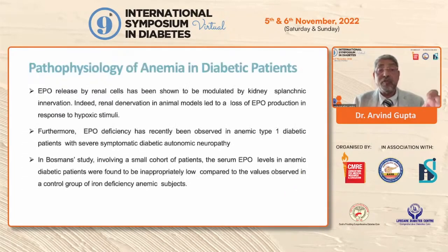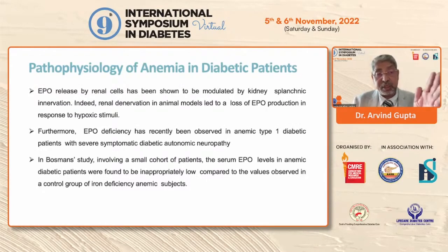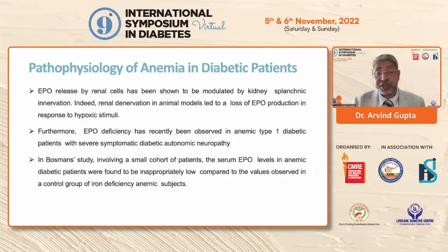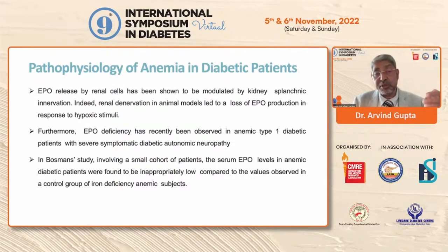Now, what is the real pathophysiology? At the molecular level, erythropoietin (EPO) released by renal cells has been shown to be modulated by kidney splanchnic innervation. Renal denervation in animal models has led to loss of EPO production in response to hypoxic stimuli. This may be one mechanism by which not only the production of EPO is reduced, but hyporesponsiveness is also present.